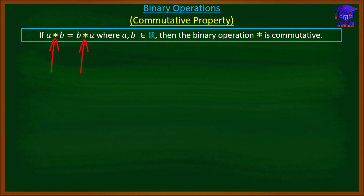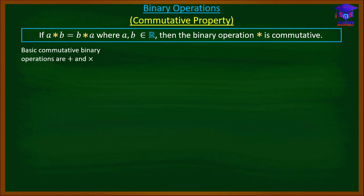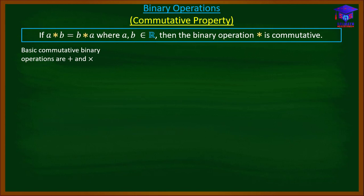The operation star can be addition, subtraction, multiplication, division, or any other binary operation. Some of the basic commutative binary operations are addition and multiplication. What we mean is that addition and multiplication of real numbers are commutative.